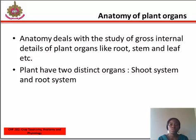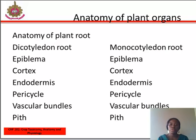Plant organs include root, stem, and leaves. Plants act through distinct organs, which are the shoot system and the root system. Under the anatomy of plant organs, roots will be discussed in two ways using dicotyledon and monocotyledon roots.